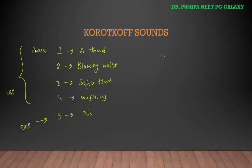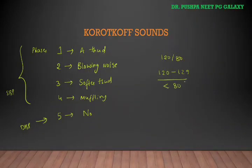Normal blood pressure is 120 by 80. If systolic blood pressure is between 120 to 129 and diastolic blood pressure is 80 or less than 80, it is considered as elevated blood pressure. This is not hypertension.